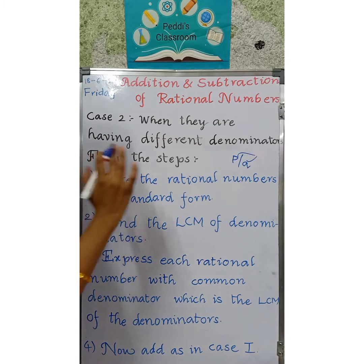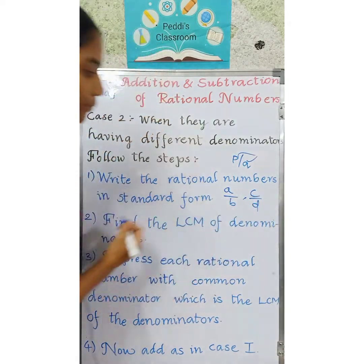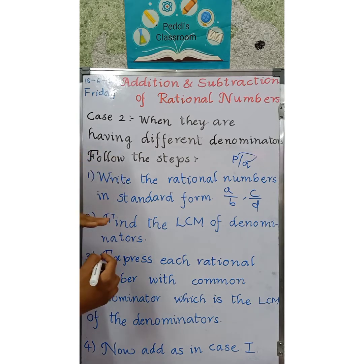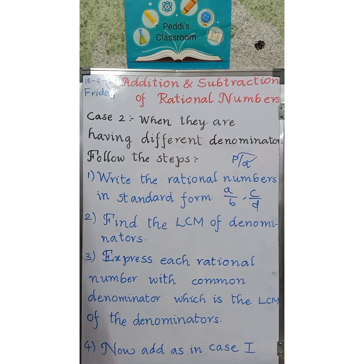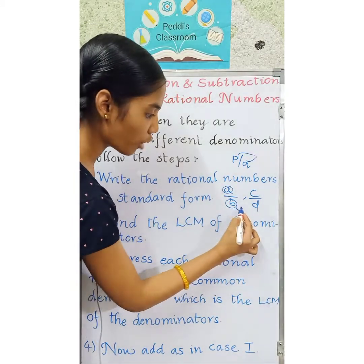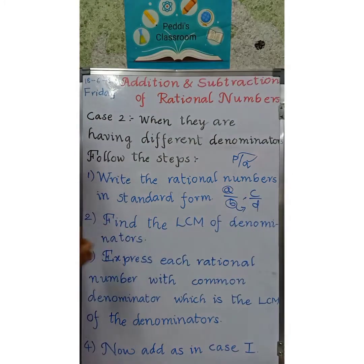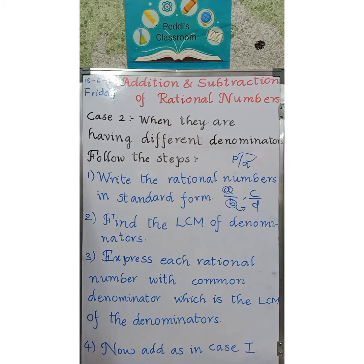For example, if we have two fractions A by B and C by D, their denominators are B and D, and we have to find the LCM of B and D. Step 3: express each rational number with a common denominator, which is the LCM of the denominators — converting A by B and C by D into the form with denominator LCM. Step 4: add them as in Case 1, since they will now have common denominators.